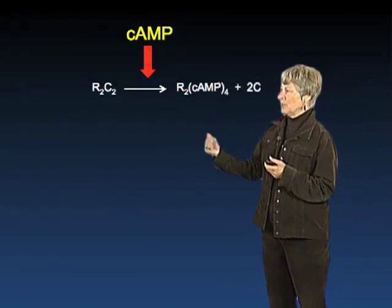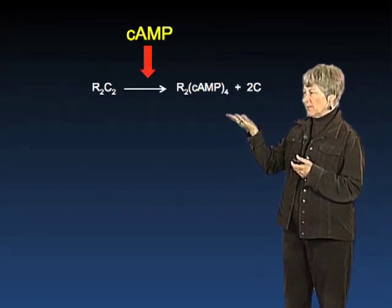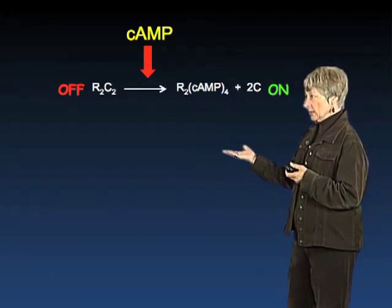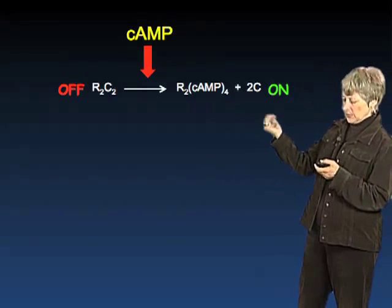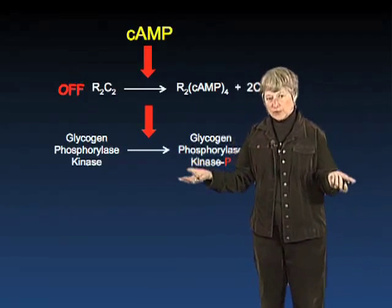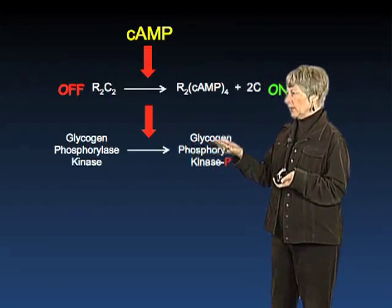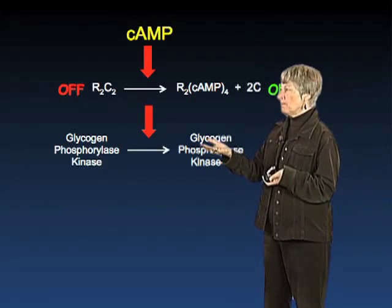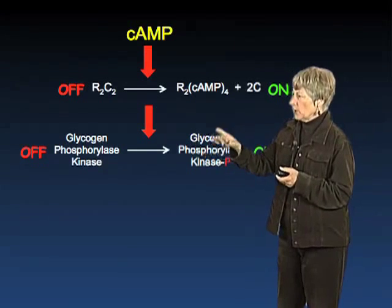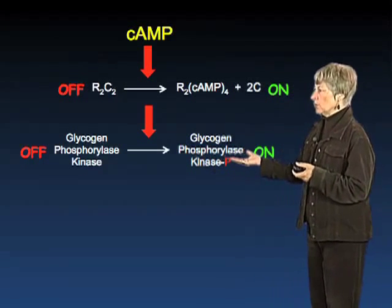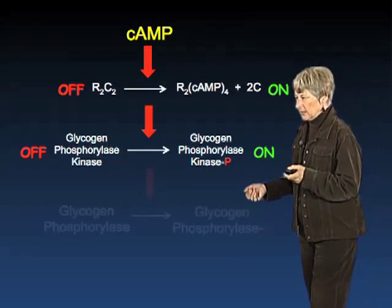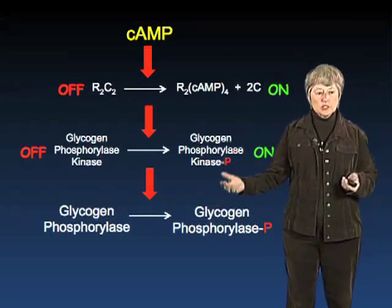Cyclic AMP gets made in response to glucagon. It binds to PKA and converts it from an inactive state to an active state. With respect to glycogen metabolism, glycogen phosphorylase kinase — the first kinase that Krebs and Fischer characterized — is the kinase that phosphorylates glycogen phosphorylase. PKA turns it from an off state to an on state. So we now have one kinase, PKA, turning on another kinase, glycogen phosphorylase kinase, which in turn acts on glycogen phosphorylase, converting it from an inactive state to an active state.